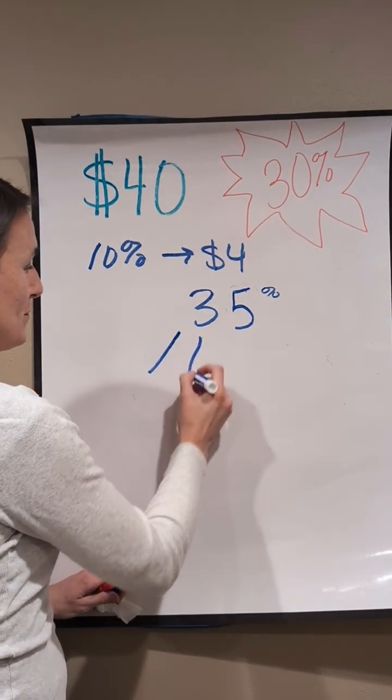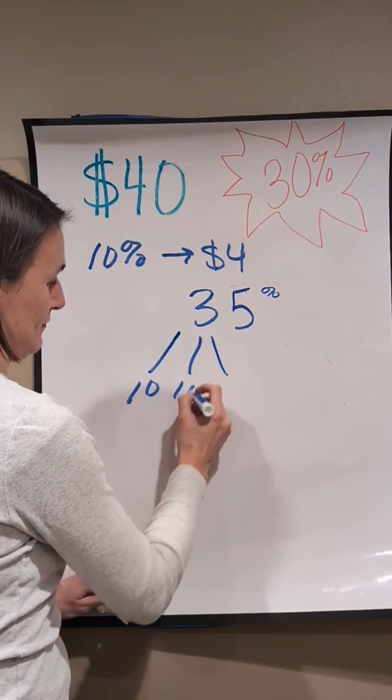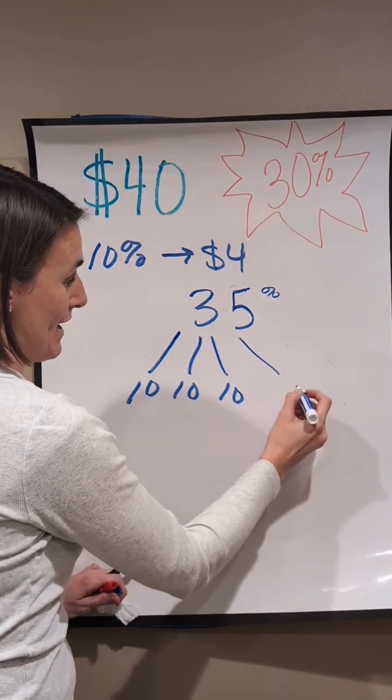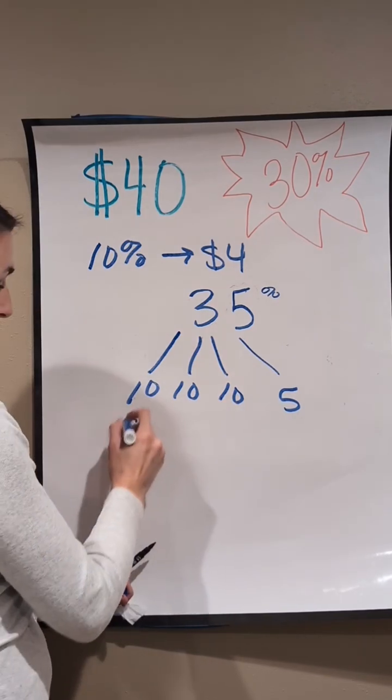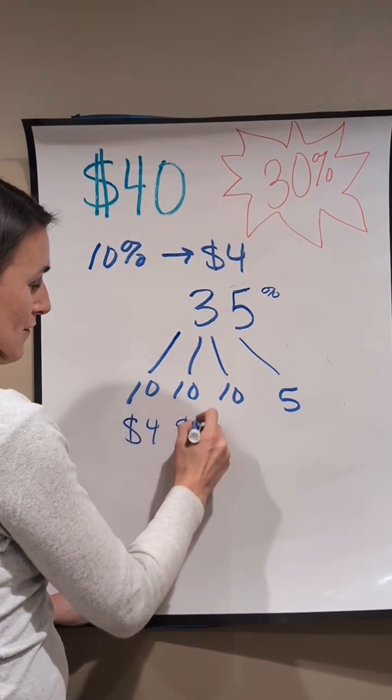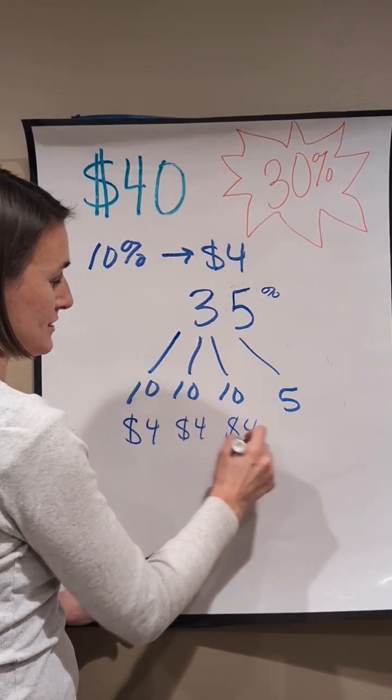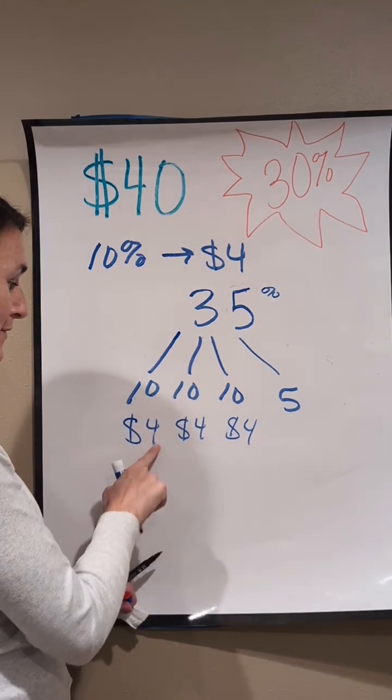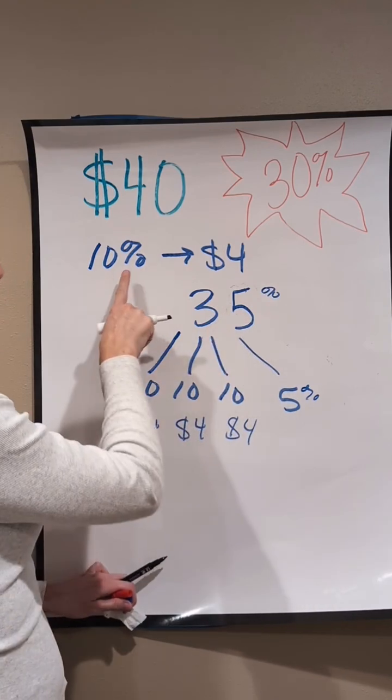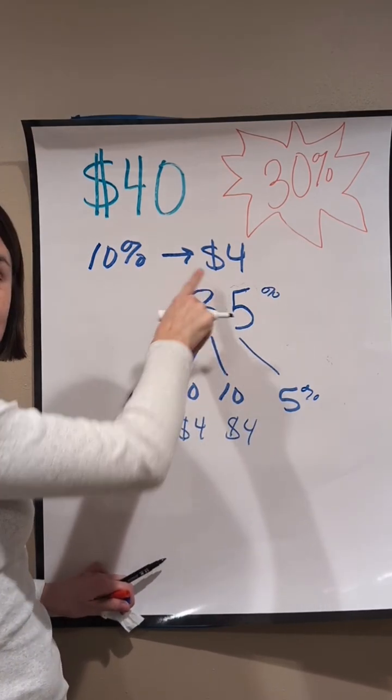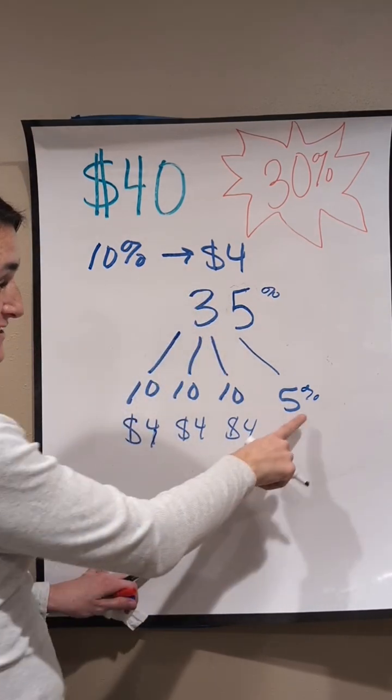I think, okay, I have my three groups of 10, but then I also have another 5% that I have to figure out. I can do the same thing where I did $4, $4 and $4 to get each of my 10%. And then now I have to think about 5%. Okay, I know that 10% was $4, and I know that half of 10 is 5.